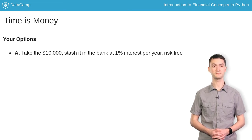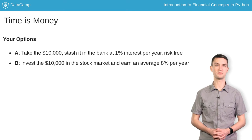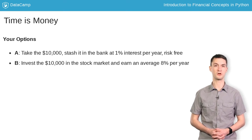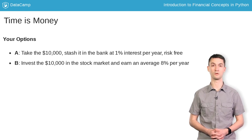That's fine, but you can earn more if you take more risk. Take the $10,000, invest it in the stock market, and earn 8% per year on average. You could also lose money or make more than 8%, but on average, the return will be roughly 8%.